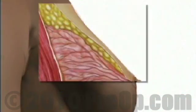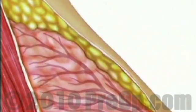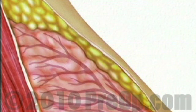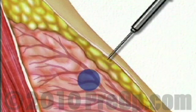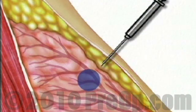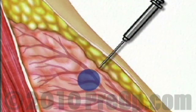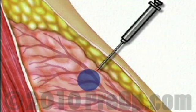Usually the surgeon will inject more than one spot in order to make sure that the entire area is thoroughly numb. After allowing a few minutes for the anesthetic to take effect, the surgeon will insert the biopsy needle and guide it toward the lump. You will feel some pressure or even slight tugging or pulling, but you should not feel any sharp pain.